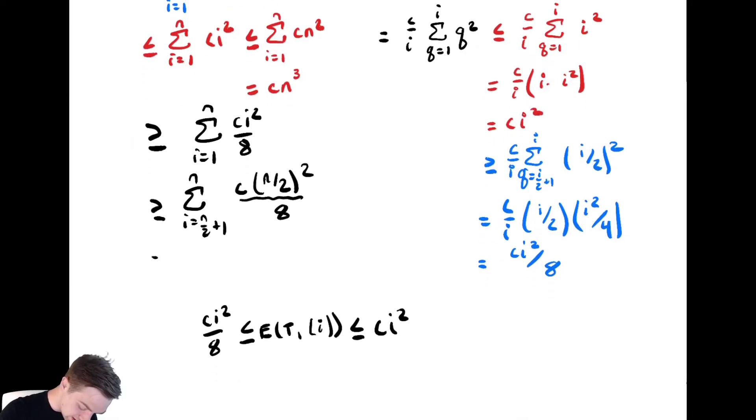Now that is equal to n/2 copies of cn² over 32. That's 4 times 8. Which this is then equal to cn³ over 64.